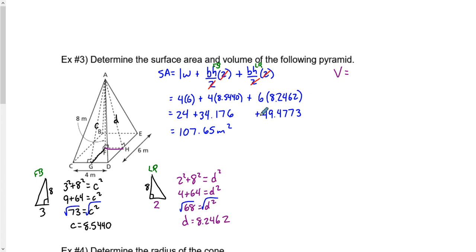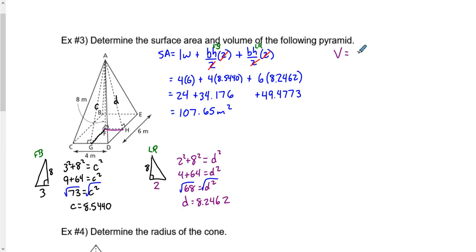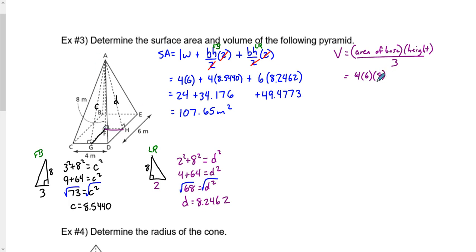Finding the volume is easy — it doesn't matter what type of pyramid you have. The formula is area of base × height ÷ 3. The base is a 4 × 6 rectangle, and the pyramid height is 8. So: (4 × 6 × 8) ÷ 3 = 64. The volume is 64 m³.